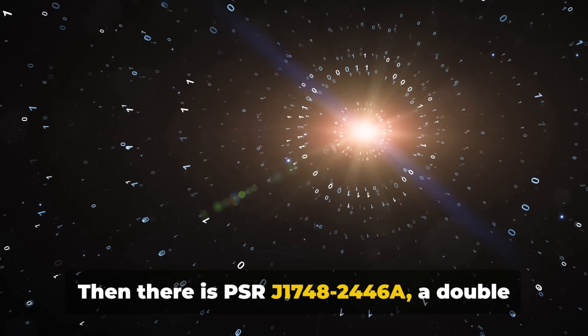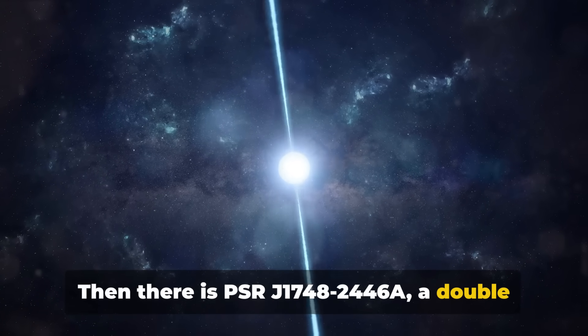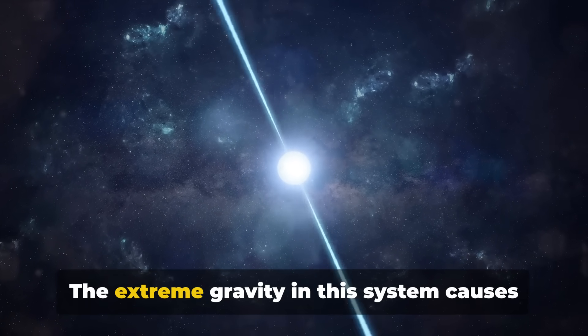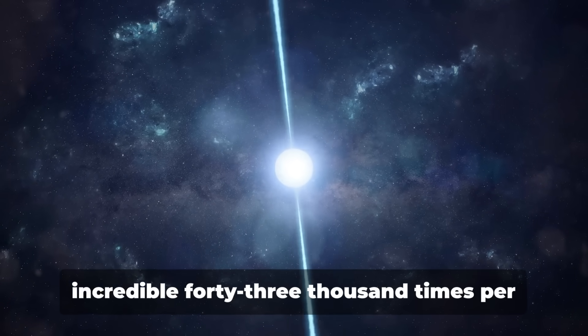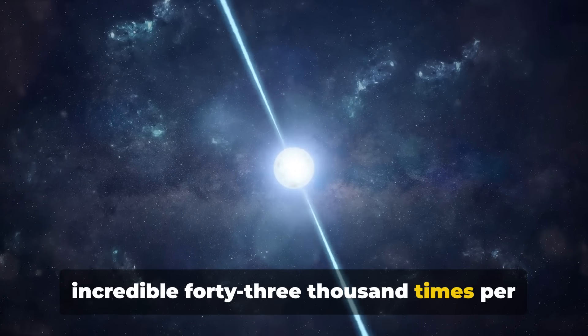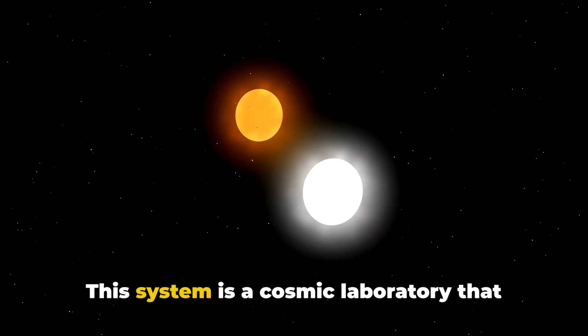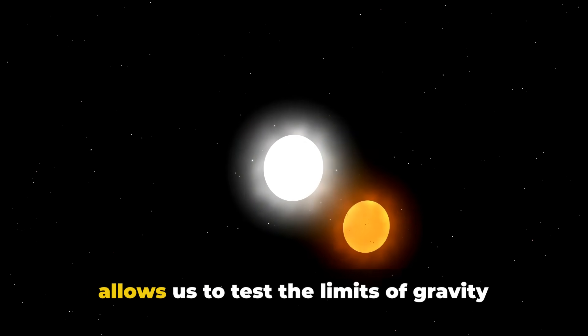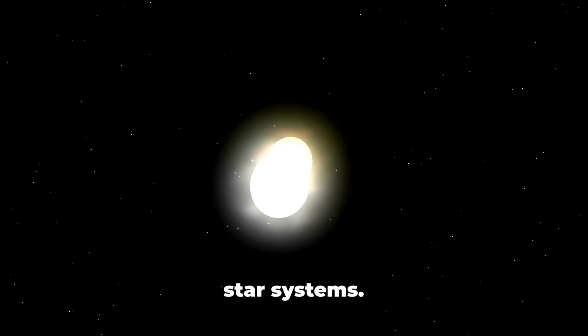Then there is PSR J17482446A, a double pulsar system. The extreme gravity in this system causes one of the pulsars to spin at an incredible 43,000 times per second, making it the fastest spinning pulsar known. This system is a cosmic laboratory that allows us to test the limits of gravity and understand the evolution of binary star systems.